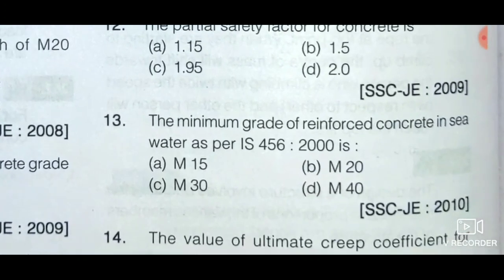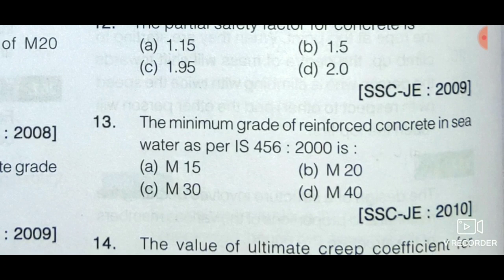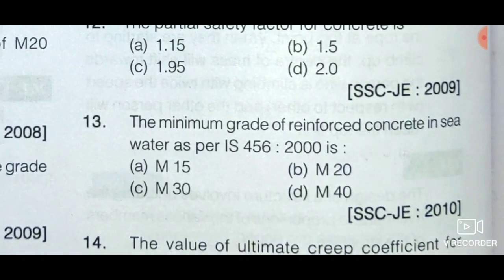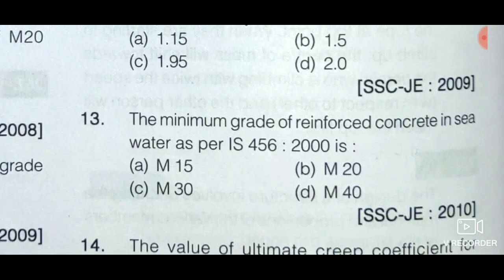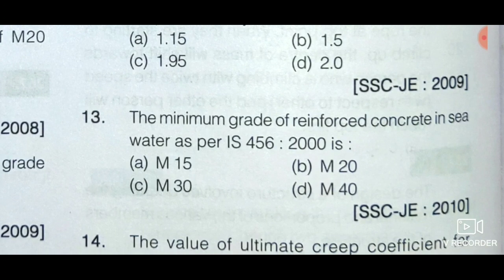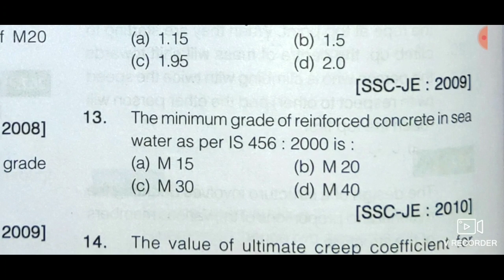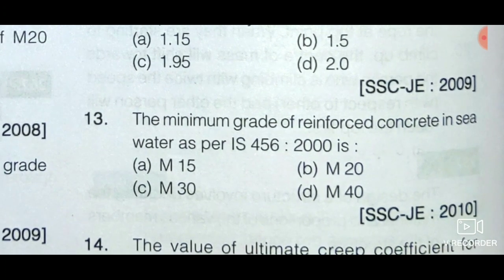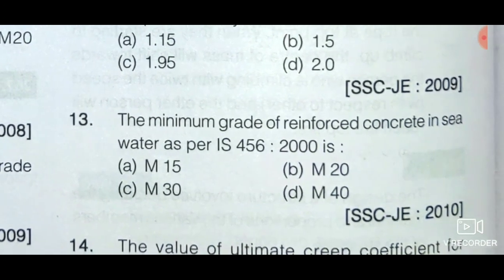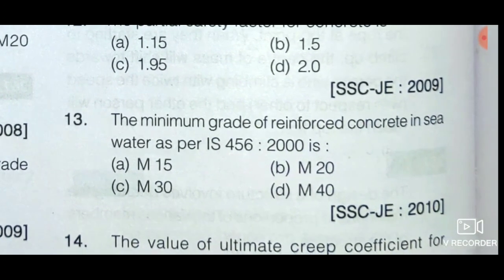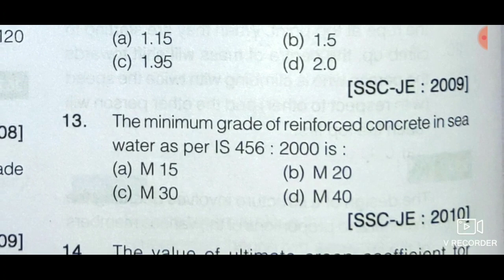Next question: The minimum grade of reinforced concrete in sea water as per IS 456:2000 is — option A: M15, option B: M20, option C: M30, and option D: M40. As per IS 456:2000, concrete in sea water or exposed directly along the sea coast shall be at least M20 grade for plain concrete and M30 for reinforced concrete. So the minimum grade of reinforced concrete in sea water is M30 — option C is the correct answer.